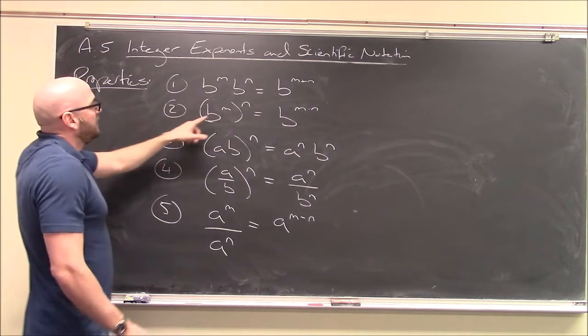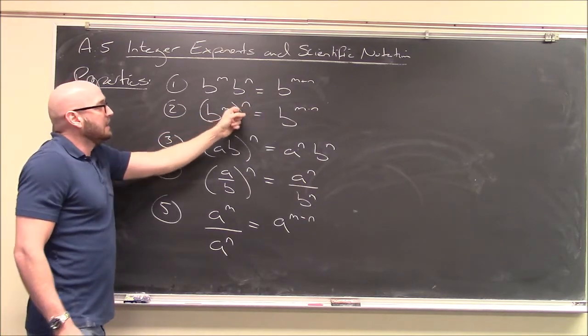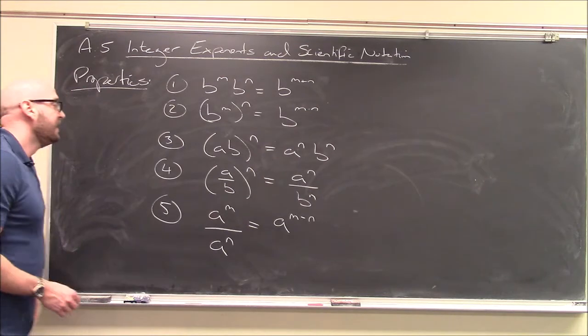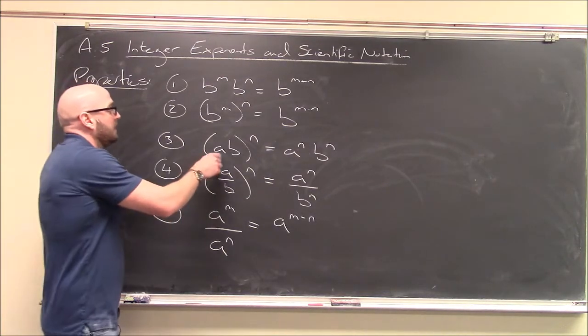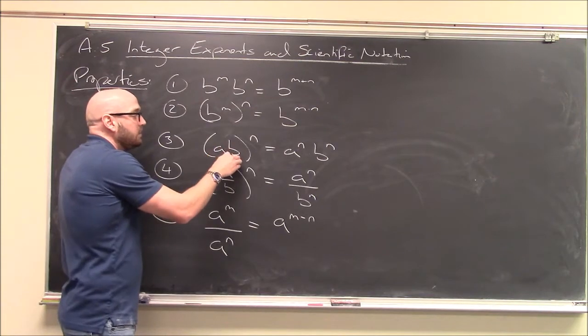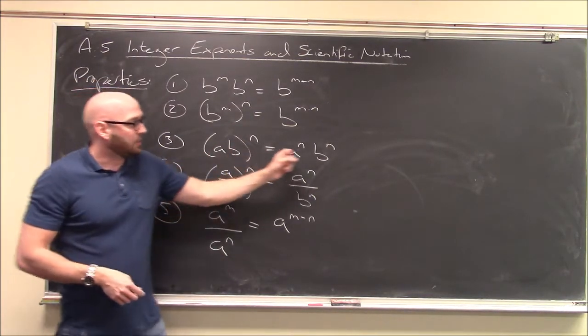The next one says if I have b to the m and then I raise that again, if I exponentiate that again to the n, the way you handle this is you multiply the exponents together. Three and four are really important properties but closely related. If I've got a product of two numbers, a times b, and I raise that to the n, what I could do is just take a to the n and multiply that by b to the n.